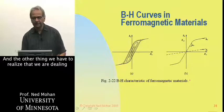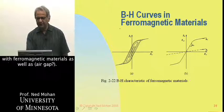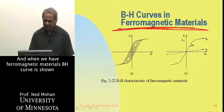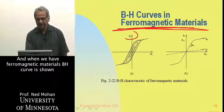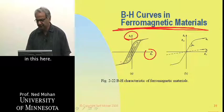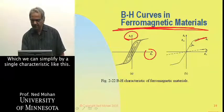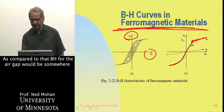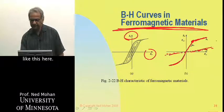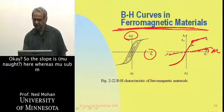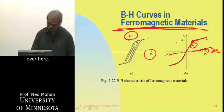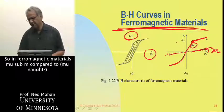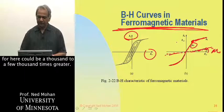We also have to deal with ferromagnetic materials as well as air gaps. The BH curve for ferromagnetic materials can be simplified by a single characteristic, and you can see it begins to saturate at the knee, compared to the BH curve for air gap. The slope for the air gap is mu-naught, whereas for the ferromagnetic core it is mu sub m — and in ferromagnetic materials, mu sub m compared to mu-naught for air could be one thousand to a few thousand times greater.